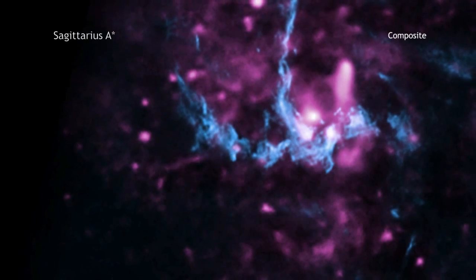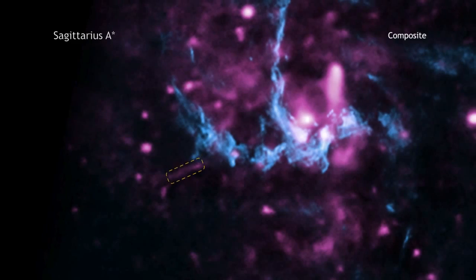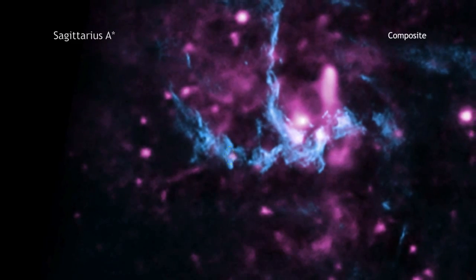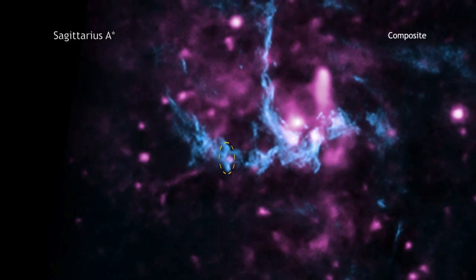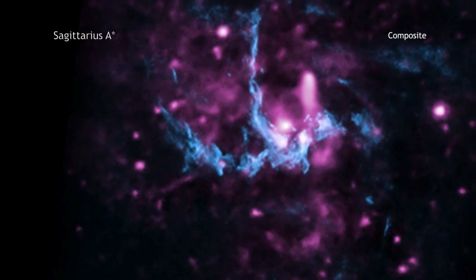One piece of evidence is a straight line of X-rays that points to Sag A star. Another is the discovery of a shock front akin to a sonic boom, seen in radio data, where the jet appears to be striking a cloud of gas.